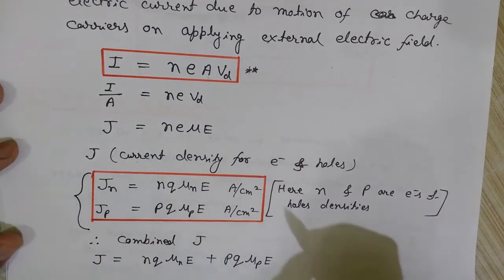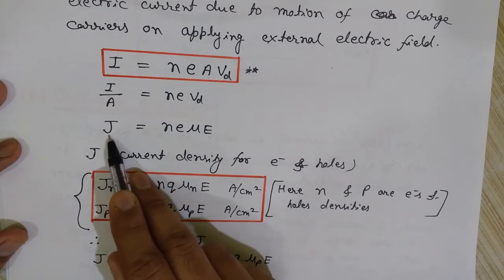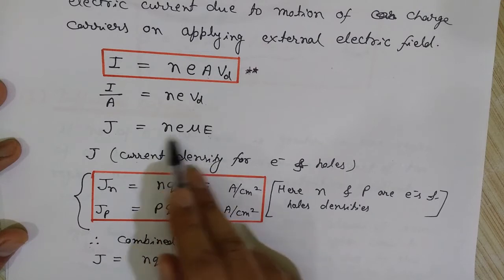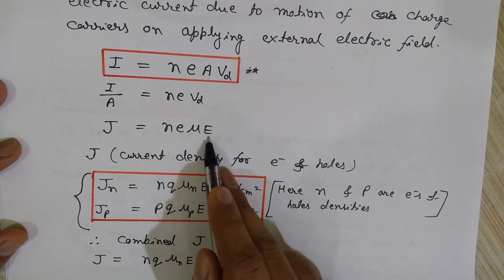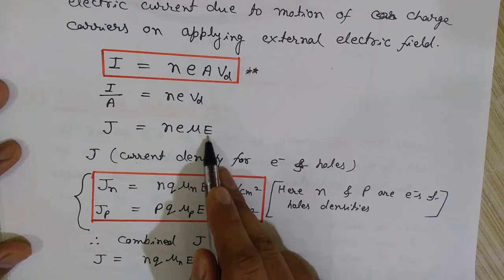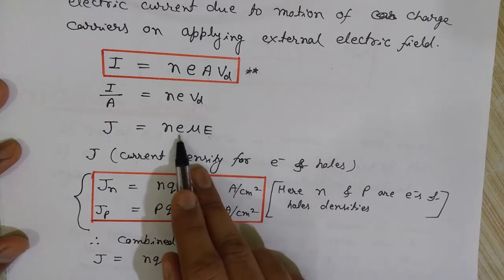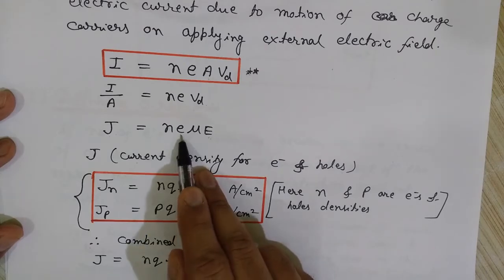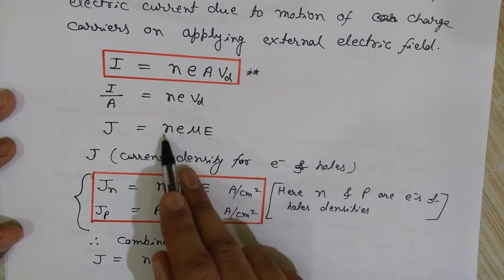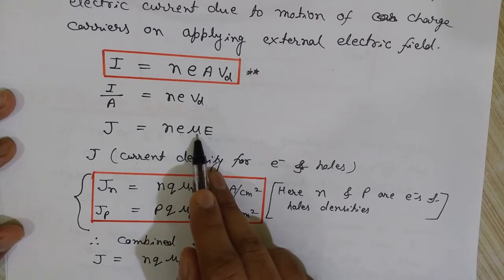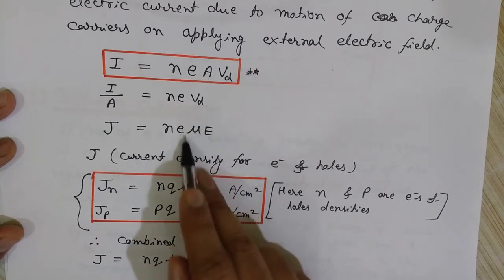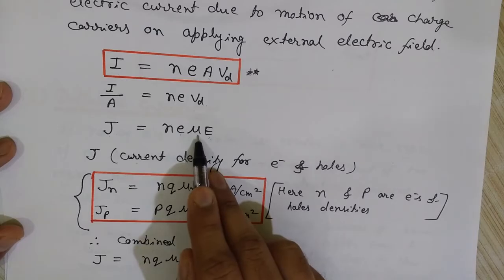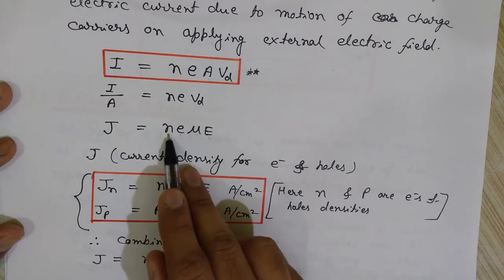Since the semiconductor contains both electrons and holes, we calculate current density separately for each. The electric field E is applied equally to both, and the charge magnitude q = 1.6 × 10⁻¹⁹ coulombs is the same for both — negative on electrons and positive on holes. However, mobility μ and concentration differ: μn is mobility of electrons, μp is mobility of holes, and the mobility of electrons is higher than that of holes.